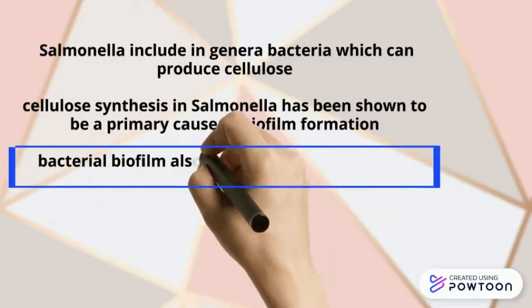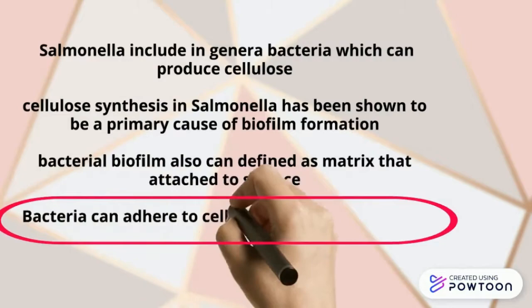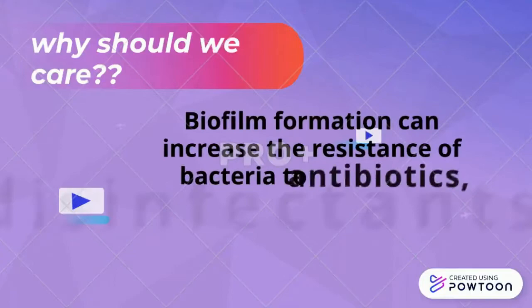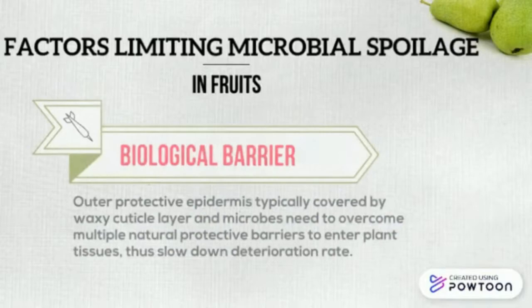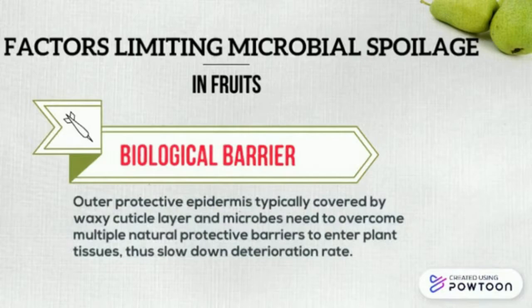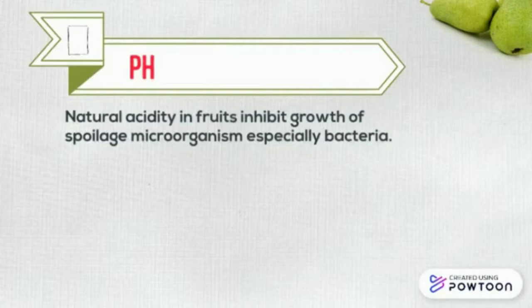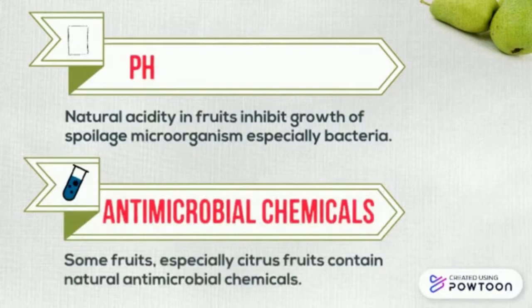Bacterial biofilm can be defined as a matrix that attaches to surfaces; bacteria can adhere to cells, tissues and solid surfaces. Factors limiting microbial spoilage in fruits include the slow deterioration rate, natural acidity (low pH) which inhibits growth of spoilage microorganisms especially bacteria, and antimicrobial chemicals — some fruits, especially citrus fruits, contain natural antimicrobial chemicals.